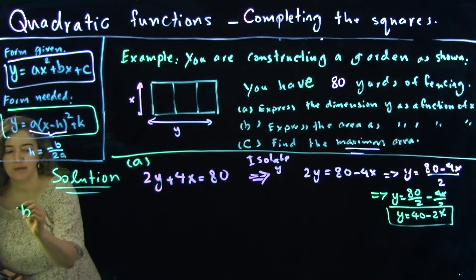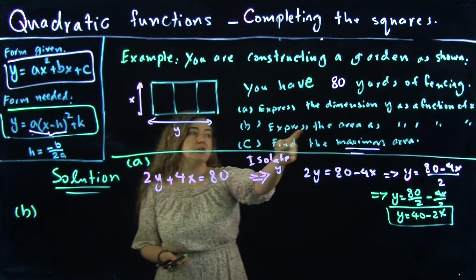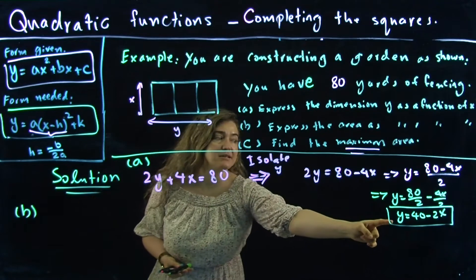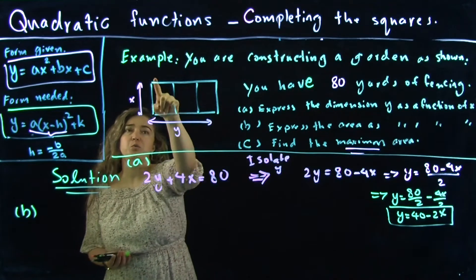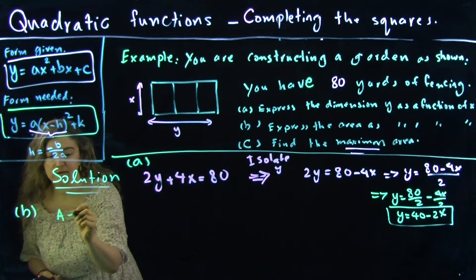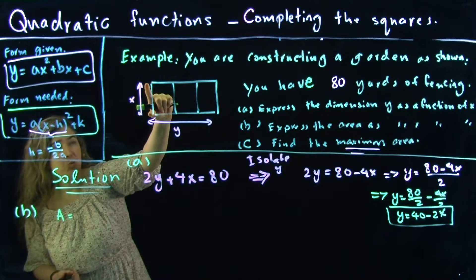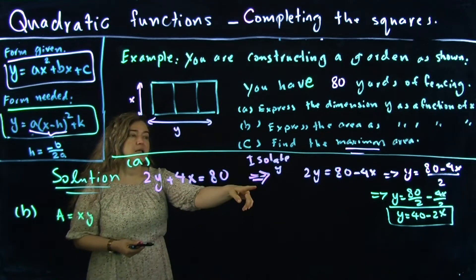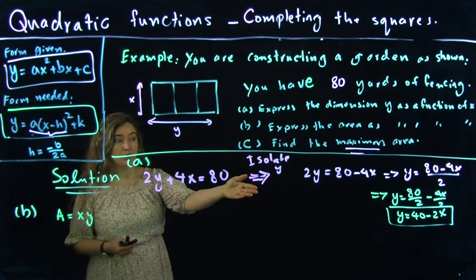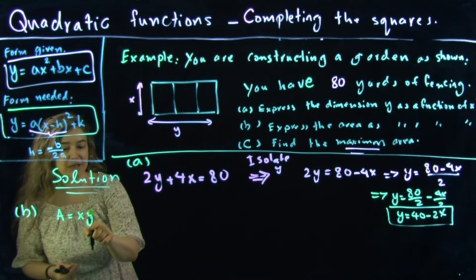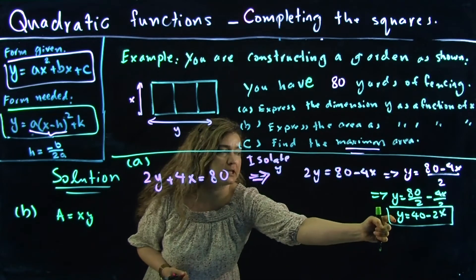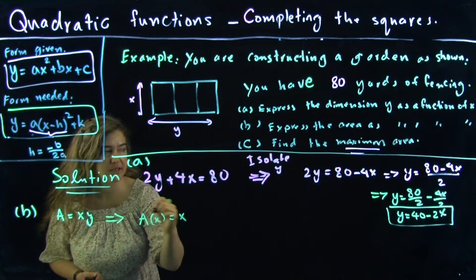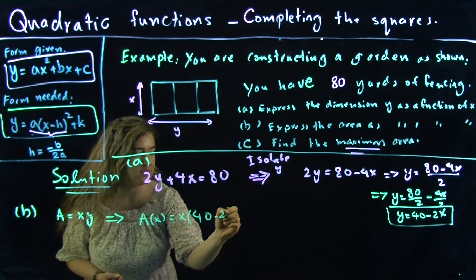Now let's do Part B: express the area as a function of x. The area of a rectangle is one side times the other side — x times y. To make this a function of x only, we replace y with what we found: A(x) equals x times (40 minus 2x).